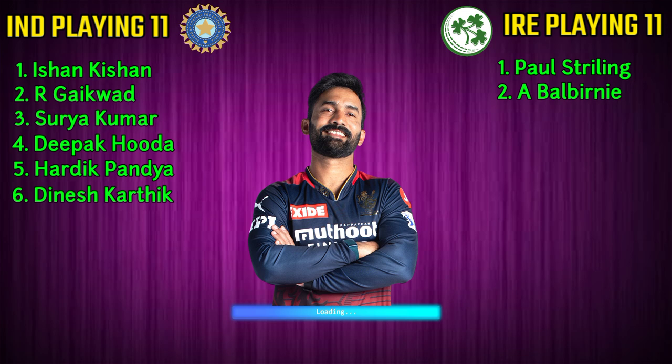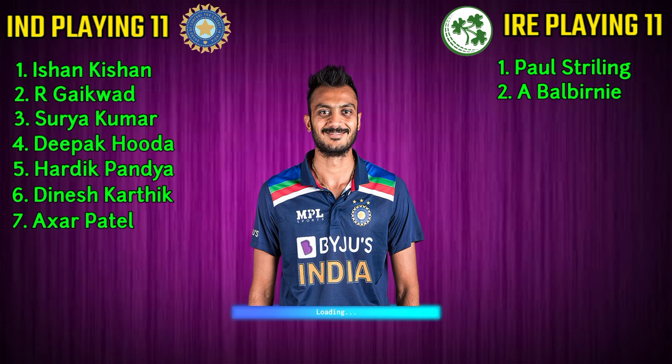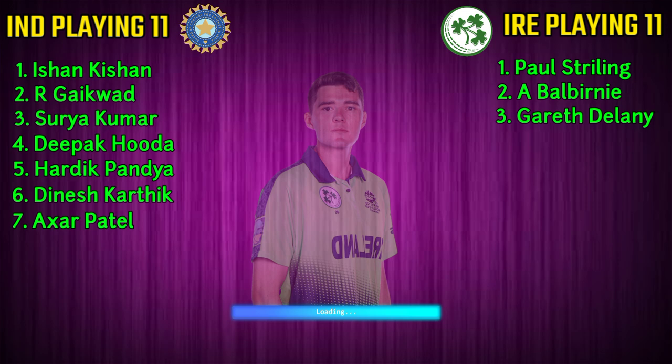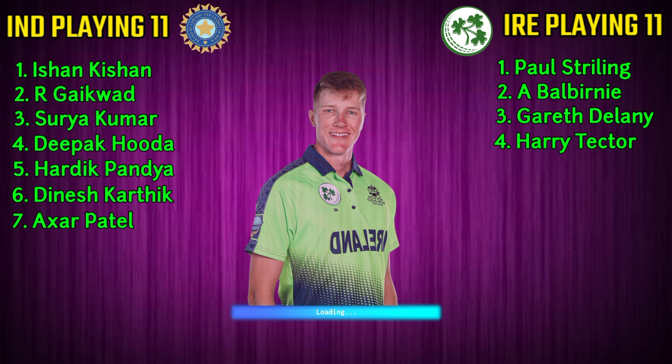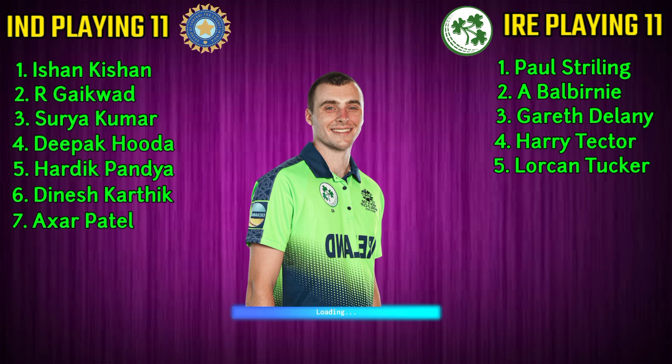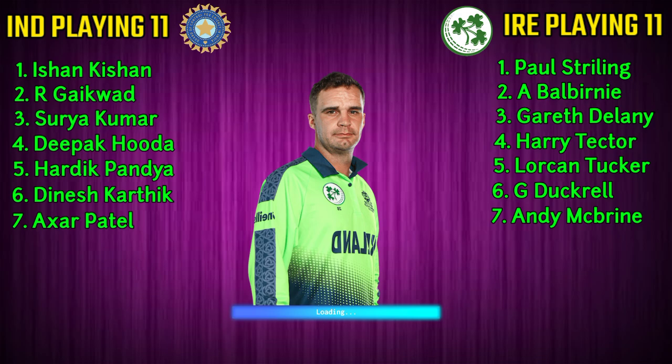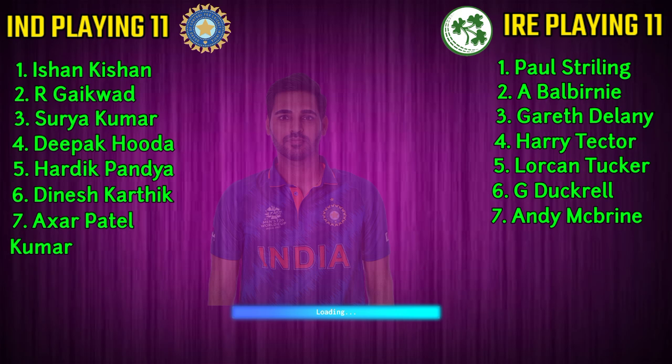Ireland team middle order: Number 3, Gert Delaney, right-handed batsman. Number 4, Harry Tector, right-handed batsman. Number 5, Lorcan Tucker, wicketkeeper batsman. Number 6, George Dockrell, all-rounder. Number 7, Andy McBrine, spin bowler.